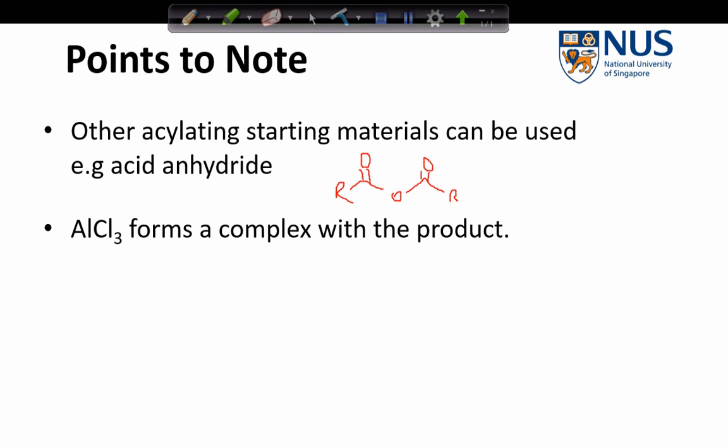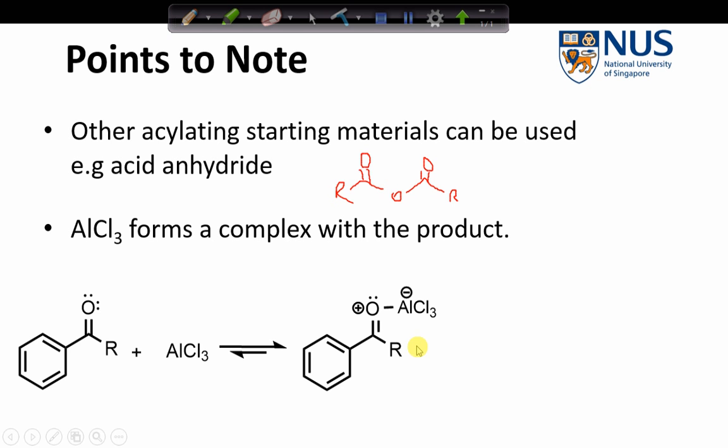Another point to note is that the acid catalyst can start to form a complex with the product as it is being formed in the reaction. So in order to avoid this, we can add water, which causes three equivalents of hydrochloric acid gas to be lost. And it actually transforms what we thought was a catalyst. So strictly in terms of this reaction, the acid chloride would not be a catalyst as it is transformed and used up at the end of the reaction.